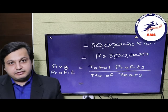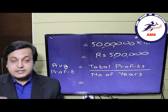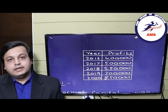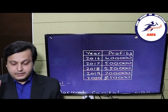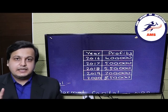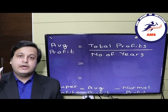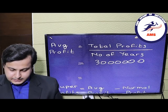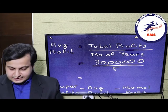Now let's calculate the average profits of our company. The formula is total profits divided by the number of years. Adding all profits from the table: 4 lakhs + 5 lakhs = 9 lakhs; 9 lakhs + 5.5 lakhs = 14.5 lakhs; 14.5 lakhs + 7 lakhs = 21.5 lakhs; 21.5 lakhs + 8.5 lakhs = 30 lakh rupees total. Dividing by 5 years gives average profits of 6 lakh rupees.